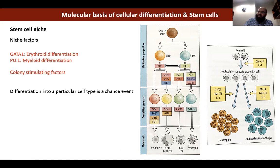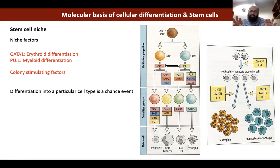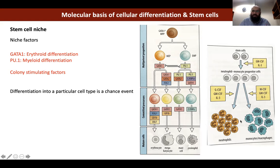Differentiation into a particular cell type may be a chance event. Experimentally, if you take a stem cell, let it divide into two daughter cells, then grow them separately with the same growth conditions — 80% of the time both daughter cells grow into what you'd expect, but 20% of the time they grow into something different. We still don't completely understand why this happens.